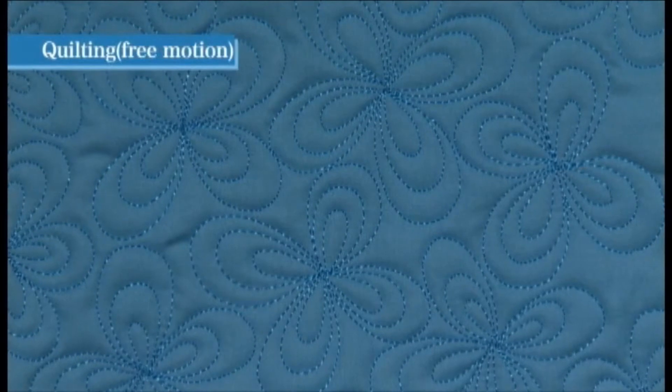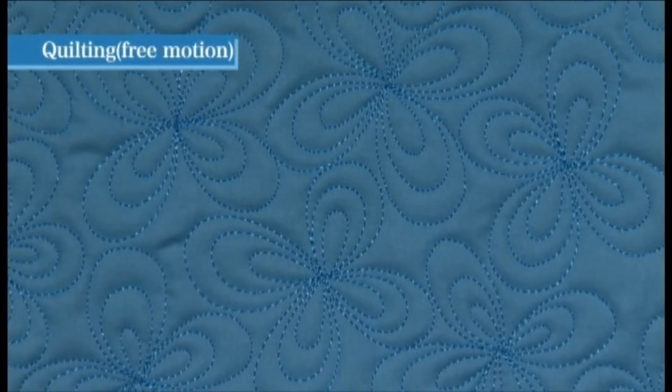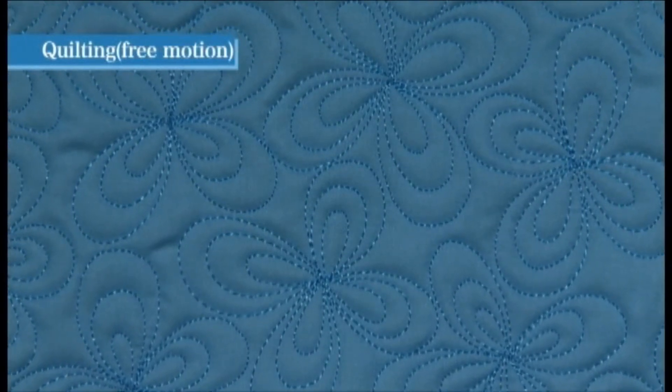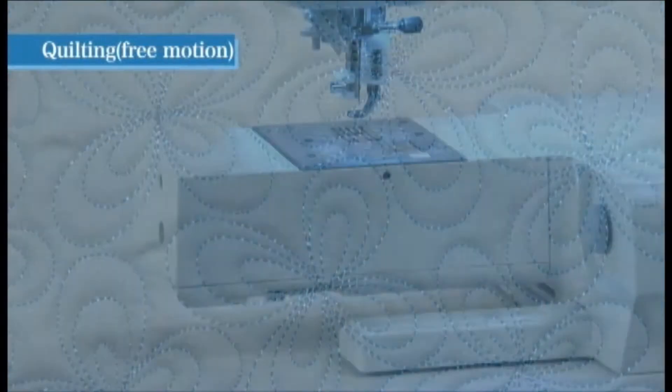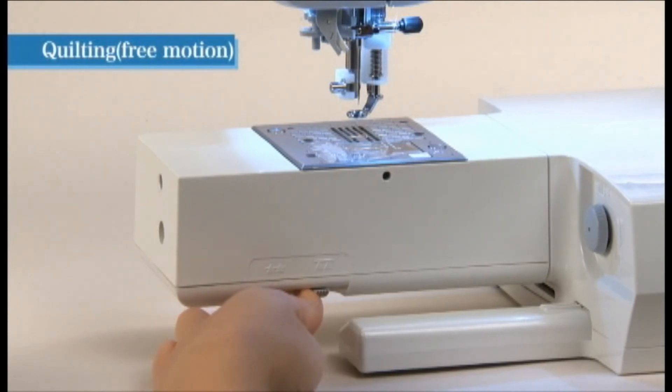Free motion quilting allows you to move the fabric freely in any direction without using the feed dog of the sewing machine. By lowering the feed dog into its drop feed condition, you can guide the fabric by hand to sew stitches along intricate curves and in any direction.